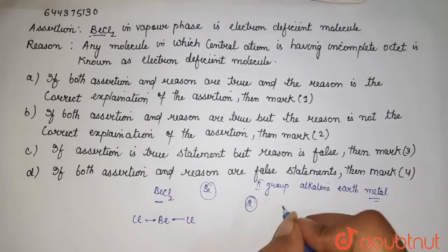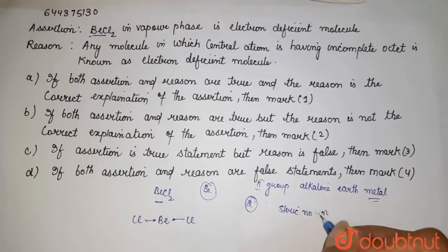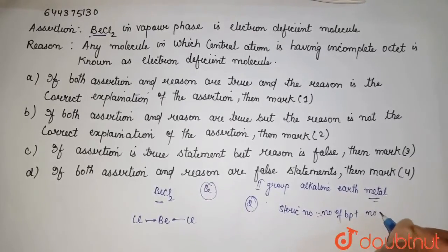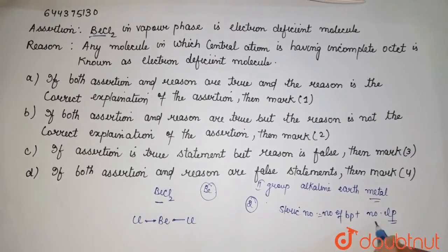So to find the hybridization, we use steric number, which is equal to number of bond pairs plus number of lone pairs. Here we are having two bond pairs and no lone pair.